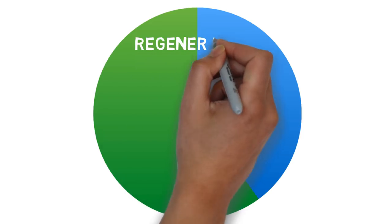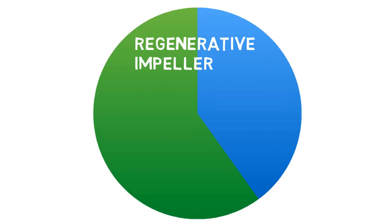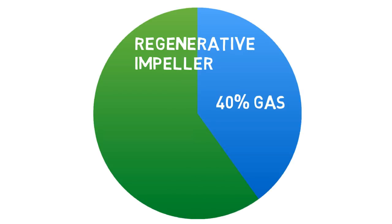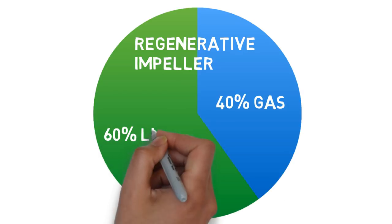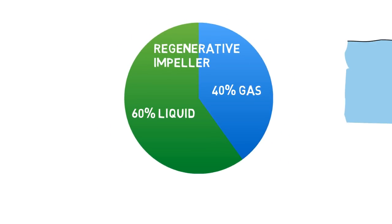The regenerative turbine impeller can pump fluid with up to 40% entrained gases without damage from cavitation or any performance loss.